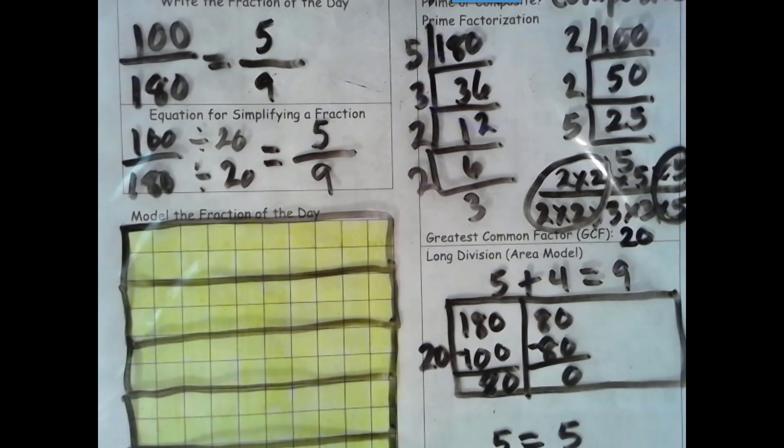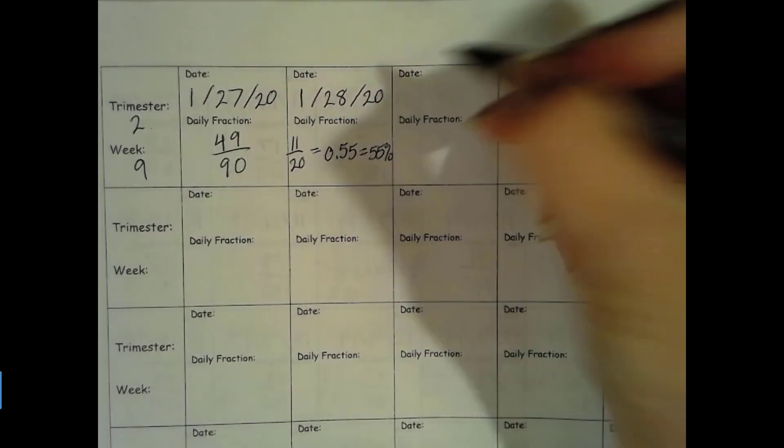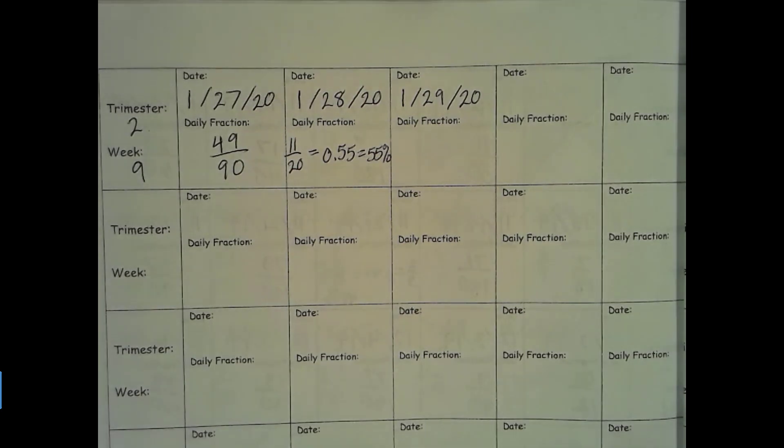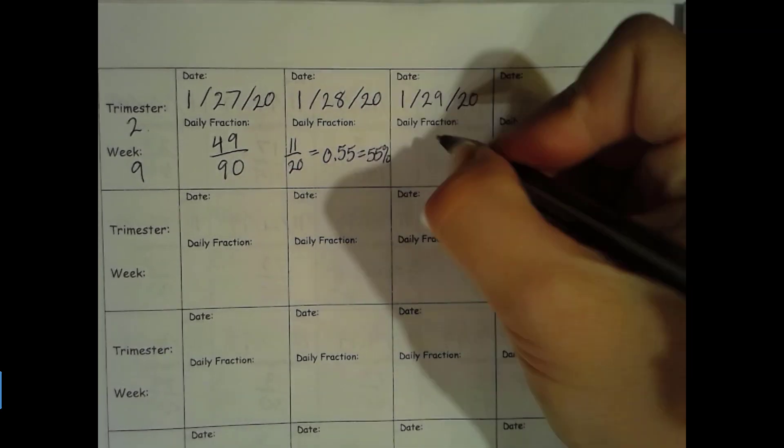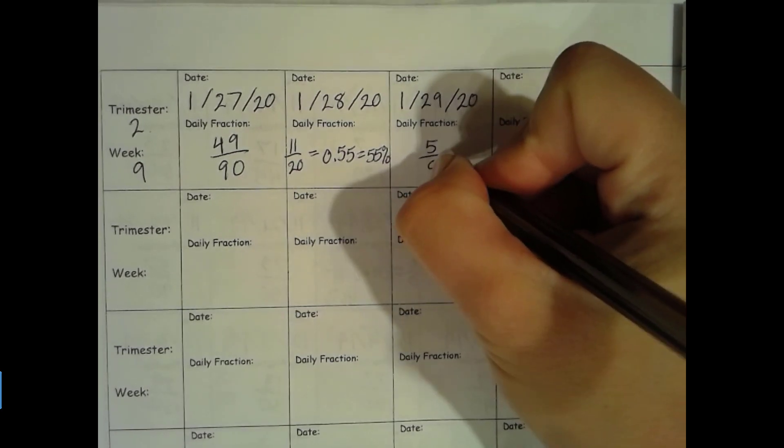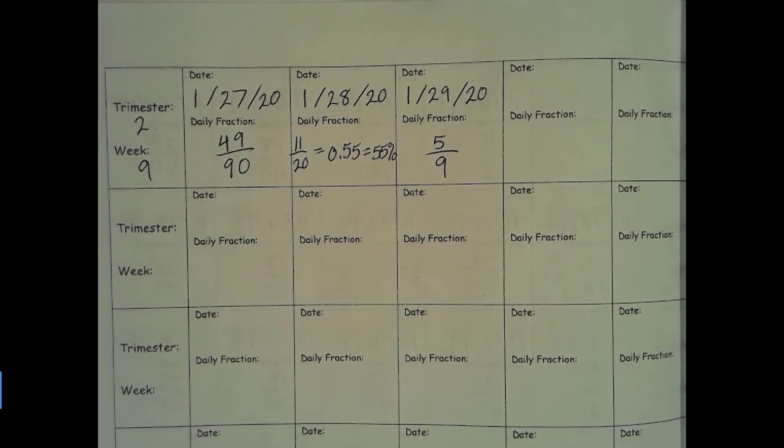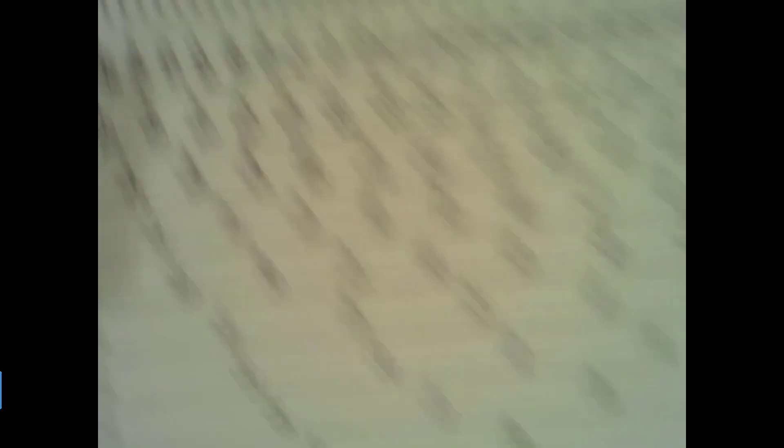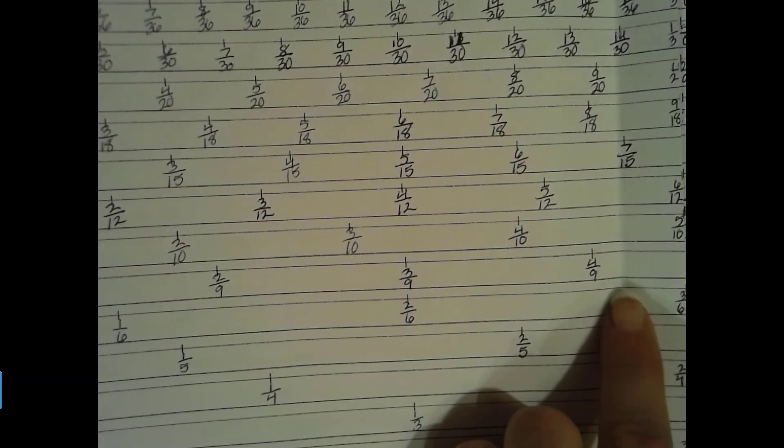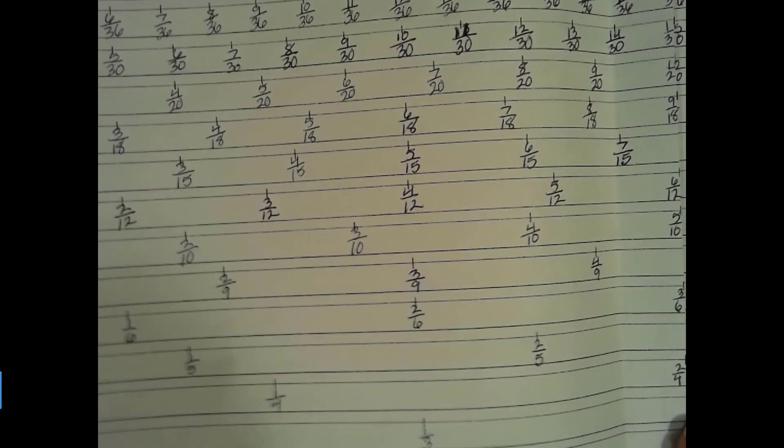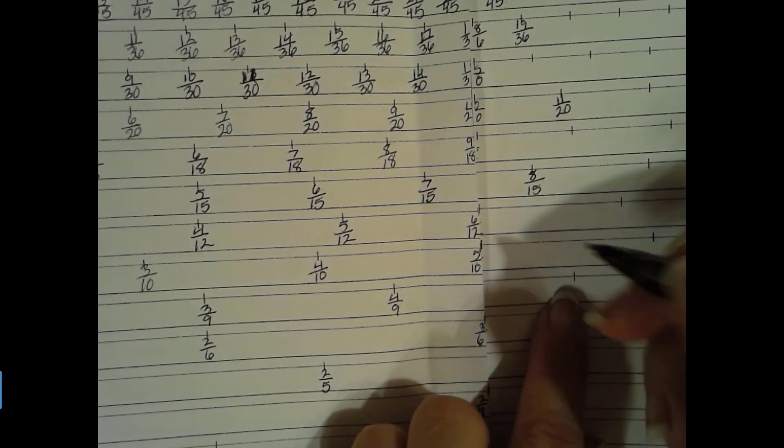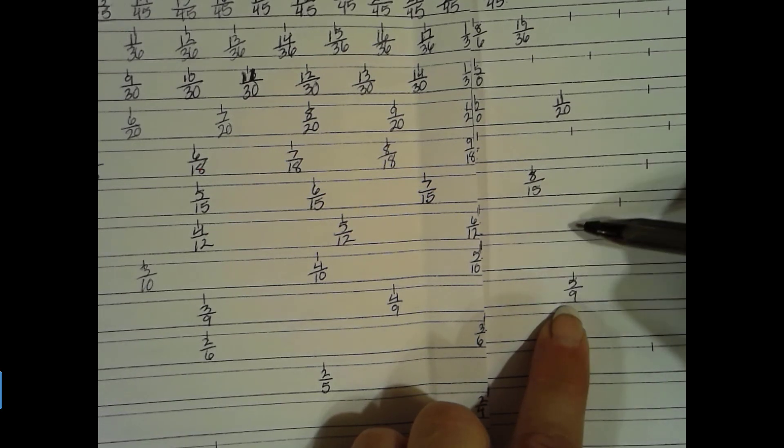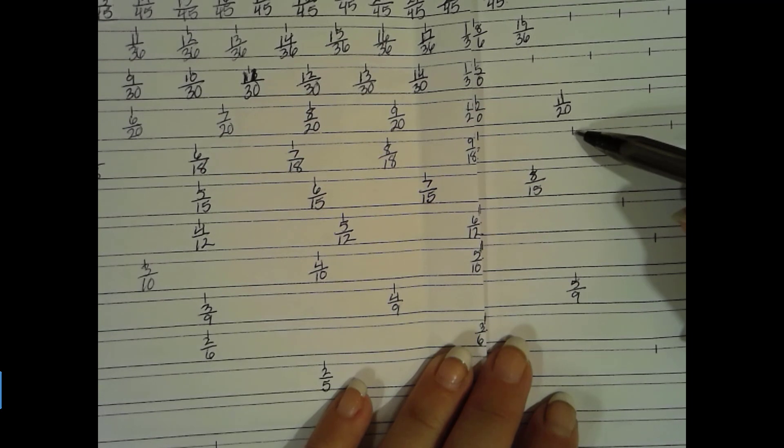Alright, let's go ahead and fill in our data collection page. Okay, trimester 2, week 9. Today is 1-29-2020. It is the 100th day of school. But that simplifies to 5 ninths. That is our fraction for today. We did groups of 20. So let's go ahead and get out our number line. And our groups of 20. We have 4 ninths already. We have to go all the way over here. And 5 ninths is our next line.